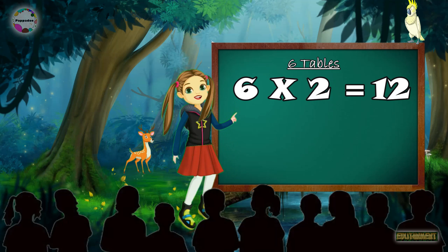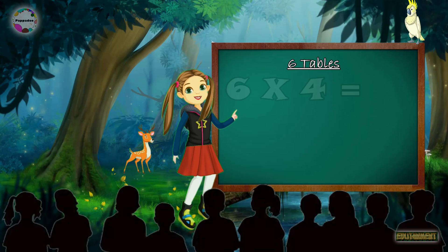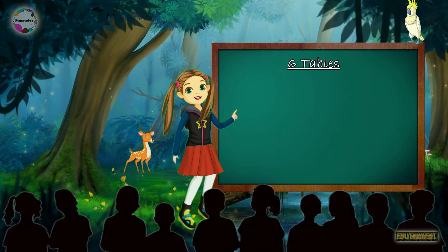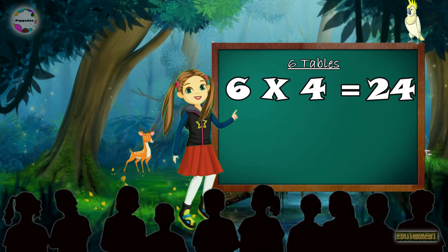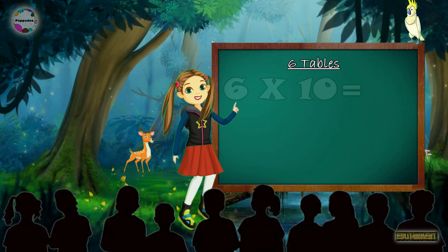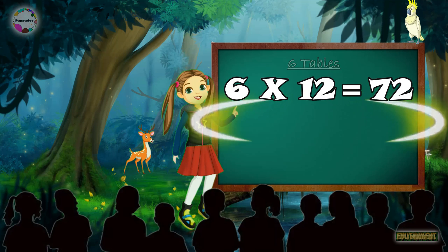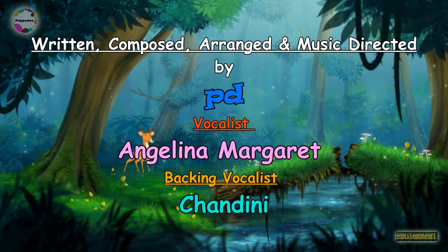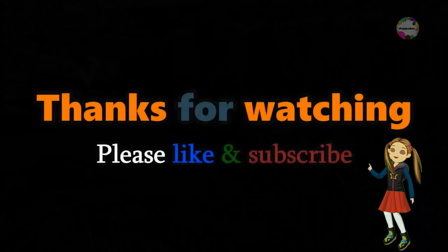6-2s are 12. 6-3s are 18. 6-4s are 24. 6-5s are 30. 6-6s are 36. 6-7s are 42. 6-8s are 48. Thank you.